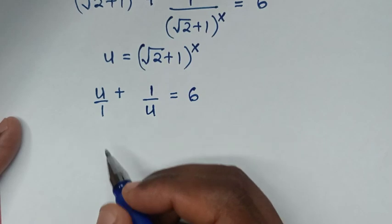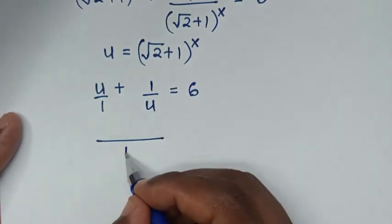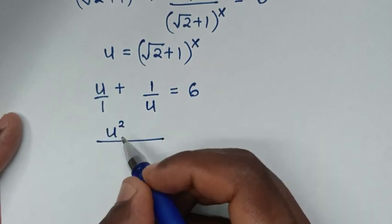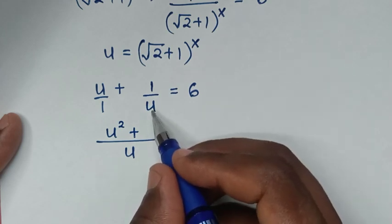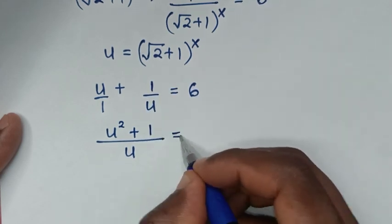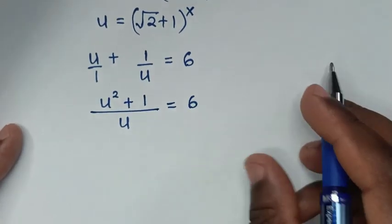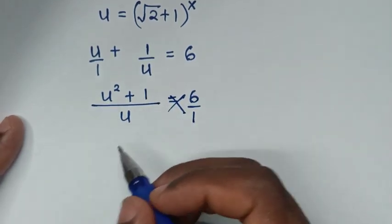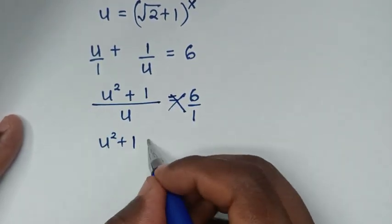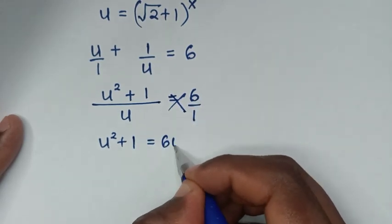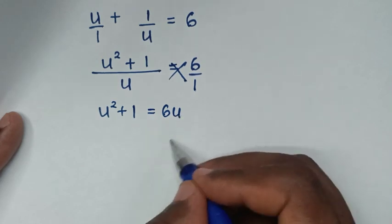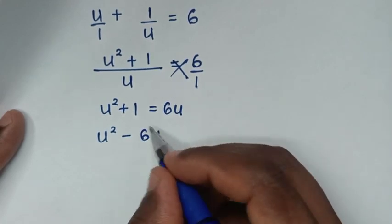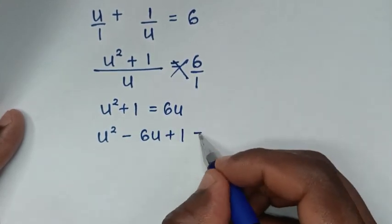Writing u + 1/u over a common denominator: (u² + 1)/u = 6. Cross-multiplying gives u² + 1 = 6u. Rearranging, we get the quadratic equation: u² − 6u + 1 = 0.